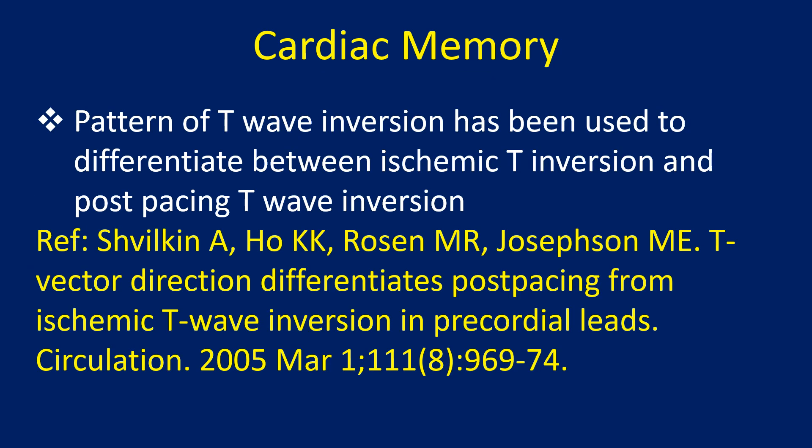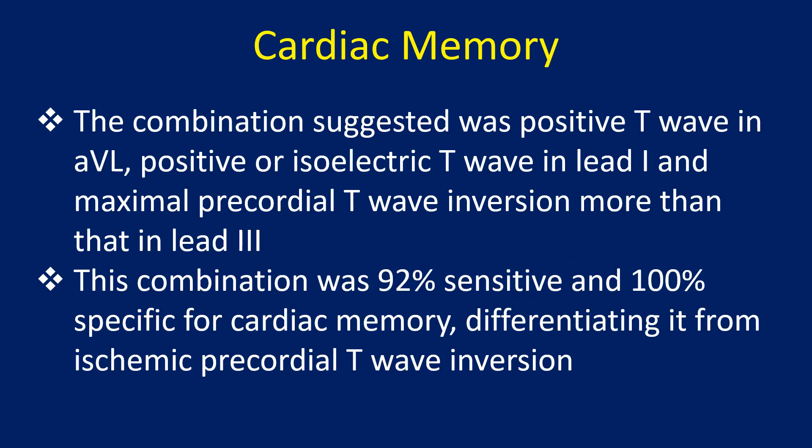The pattern of T wave inversion has been used to differentiate between ischemic T wave inversion and post-pacing T wave inversion. The combination suggested was: positive T wave in aVL, positive or isoelectric T wave in lead I, and maximal precordial T wave inversion greater than that in lead III. This combination was 92% sensitive and 100% specific for cardiac memory, differentiating it from ischemic precordial T wave inversion.